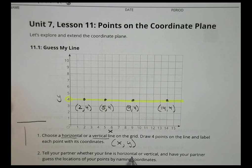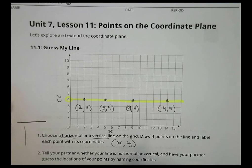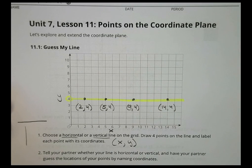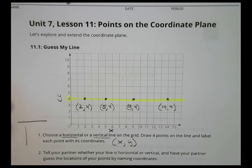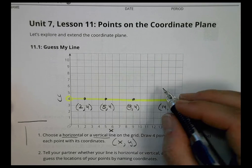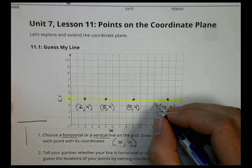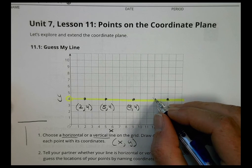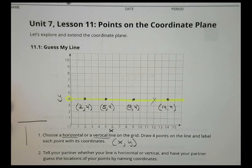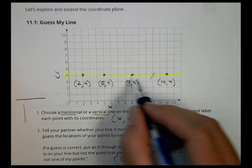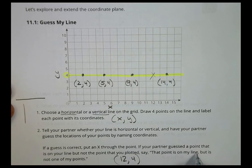Tell your partner whether your line is horizontal or vertical and have your partner guess the locations of your points by naming coordinates. Each partner should have four coordinates on the plane. And what you're going to be doing is just working with a partner, have them guess whether it's horizontal or vertical. And then if the guess is correct, you're going to put an x to the point. If your partner guessed a missed point that's on your line but not the point that you plotted, say the point's on my line but it's not on my points. So for example, let's say I'm your partner and you guessed 12 comma 4. That's going to be a correct point, but it's not on the line.